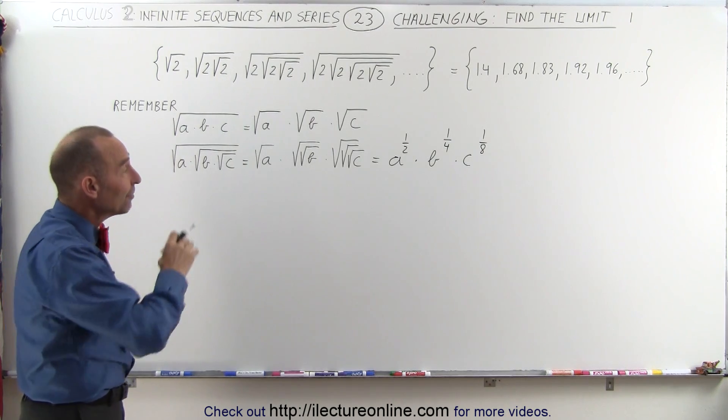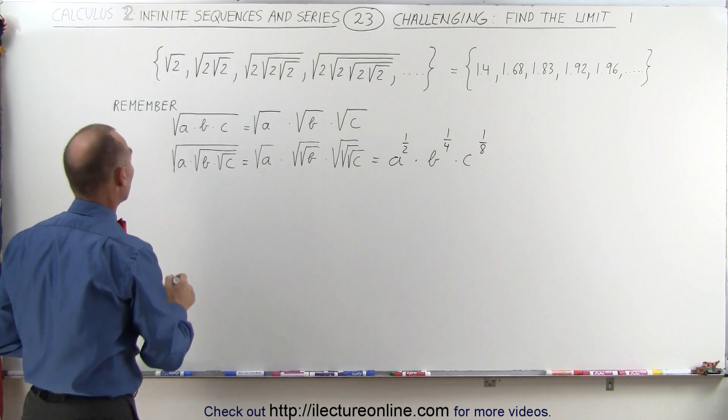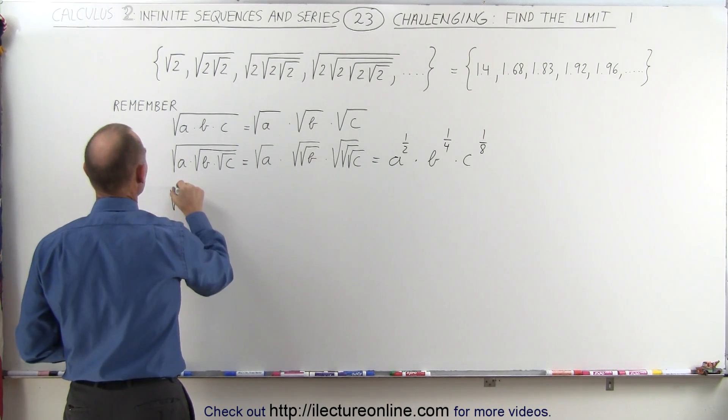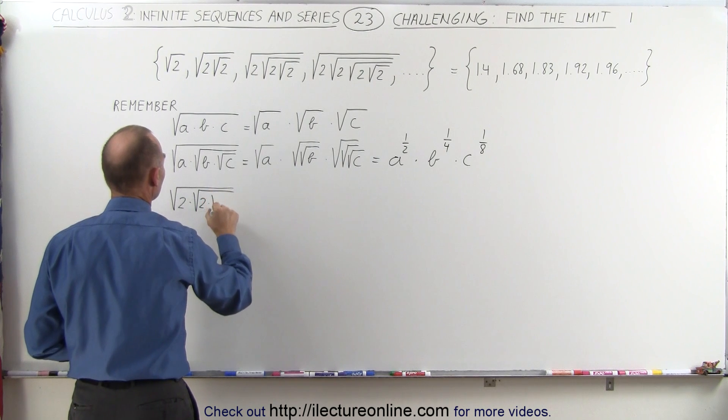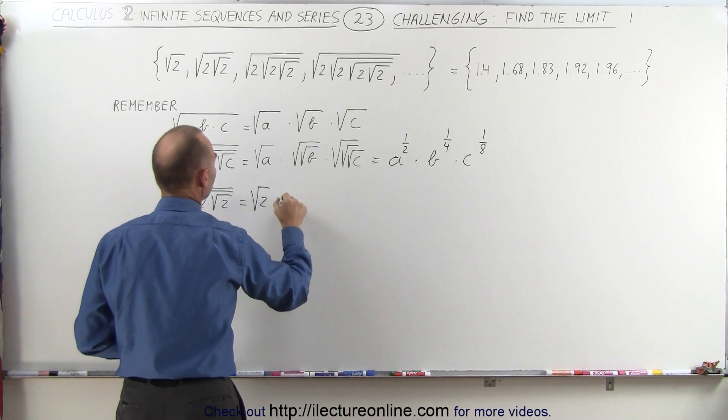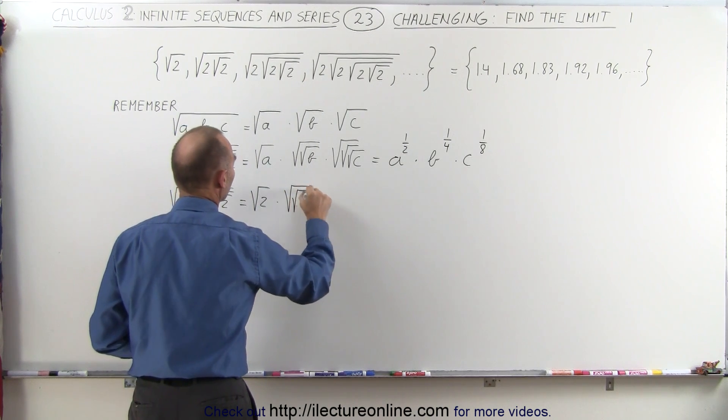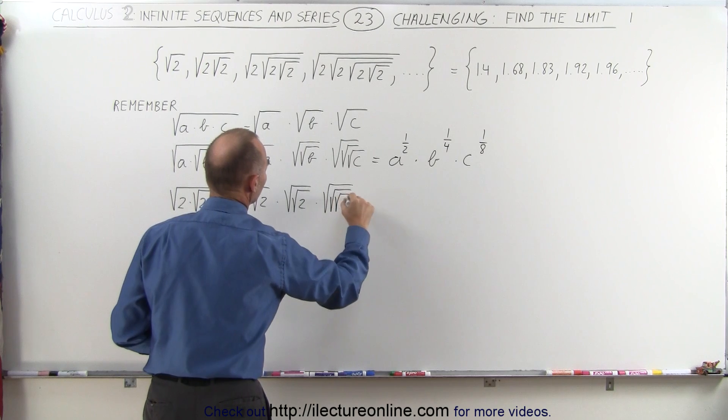All right, if that's the case, and if a and b and c are all the same number, in this case the number 2, we can then say that the square root of 2 times the square root of 2 times the square root of 2 can be written as the square root of 2 times the square root of the square root of 2 times the square root of the square root of the square root of 2,